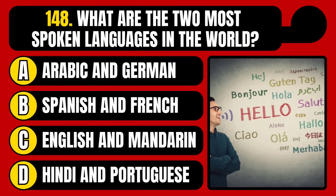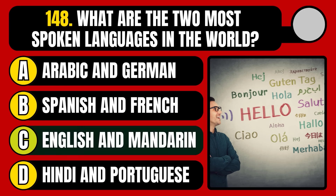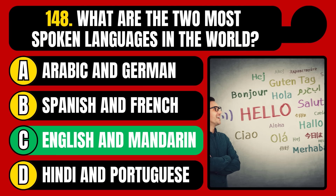What are the two most spoken languages in the world? Arabic and German, Spanish and French, English and Mandarin, or Hindi and Portuguese? The correct answer is option C, English and Mandarin.